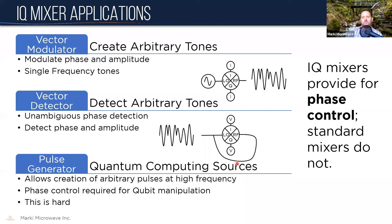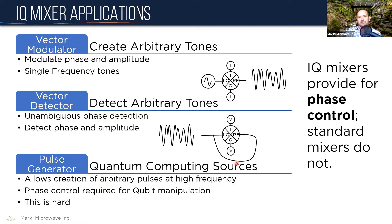Now I'm going to talk about non-typical communications applications for the IQ mixer. These are applications we get a lot of questions about on the tech support line, typically from researchers or novice users who are chemistry or physics experts but not necessarily microwave experts. The reason researchers like to use IQ mixers for different applications is that they provide phase control — or as I'll show, vector control — meaning you can create and detect tones that you can't with a normal double balanced mixer.